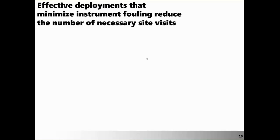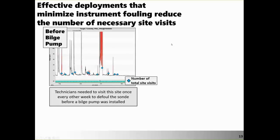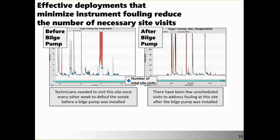Refining the deployment also reduces the number of site visits needed. Before a bilge pump was installed at one site, a three-month window shows blue diamonds representing times technicians physically had to go clean the instrument — about once every other week. After installing the bilge pump, we got a cleaner turbidity record and reduced the number of field visits, which is ultimately a cost savings that lets us reprioritize staff time.